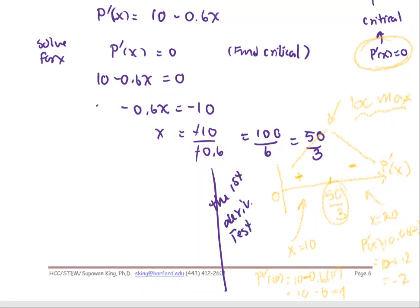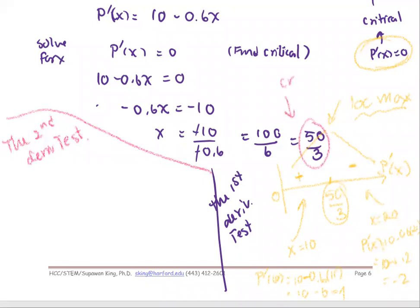Alternatively, we can use the second derivative test. The critical number is x = 50/3. Since P'(x) = 10 − 0.6x, the second derivative P''(x) = −0.6.